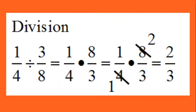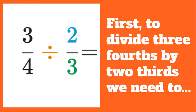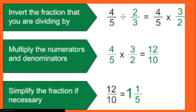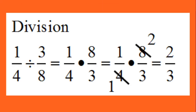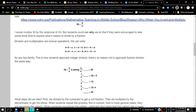Let's do one more problem to see how to simplify within the procedure. We've done simplification after the calculation in previous problems, but we can also simplify during the calculation. For example, one fourth times eight thirds — which is the reciprocal of three eighths. Eight and four share a common factor of four: eight divided by four is two, and four divided by four is one. Then multiply across: one times two is two, and one times three is three. Our final answer is two thirds.